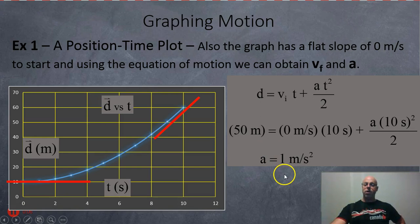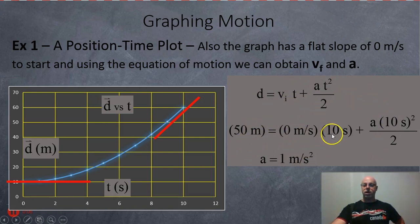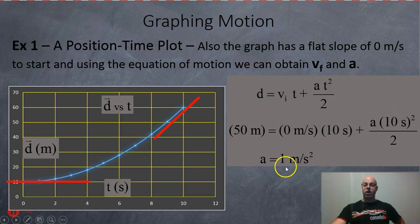Now that we've got the initial velocity, the time, and the displacement, we can solve for the acceleration. So: 50 equals zero times 10 plus A times 10 squared over 2. That gives us an acceleration of 1 meter per second squared — all based on what we can find from the graph.